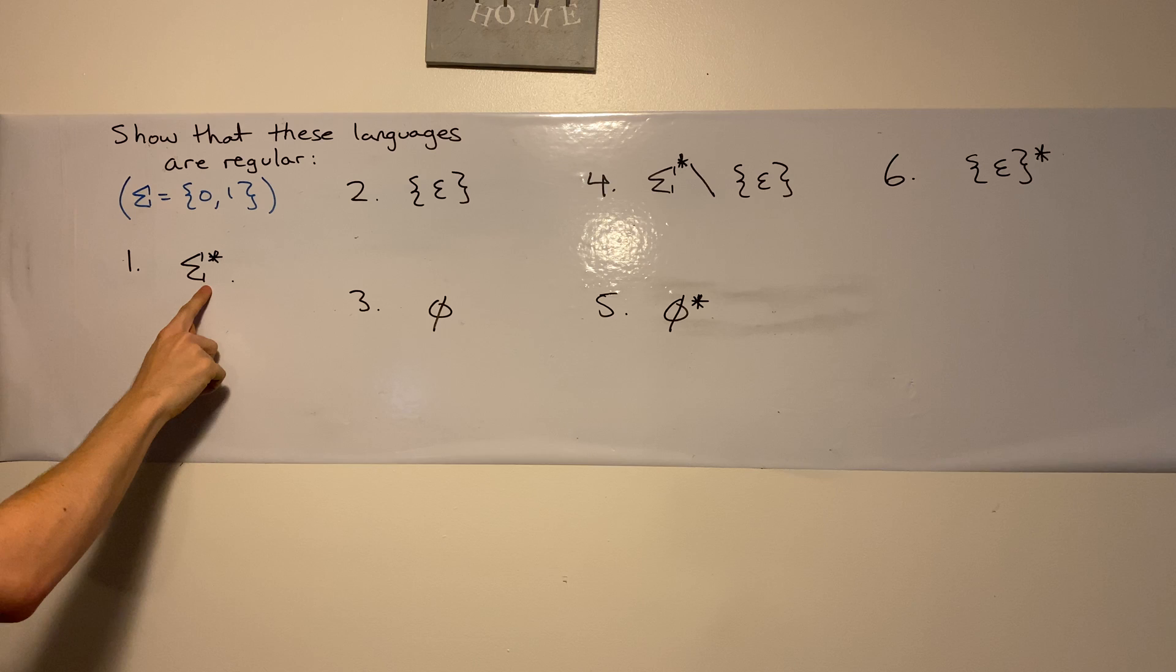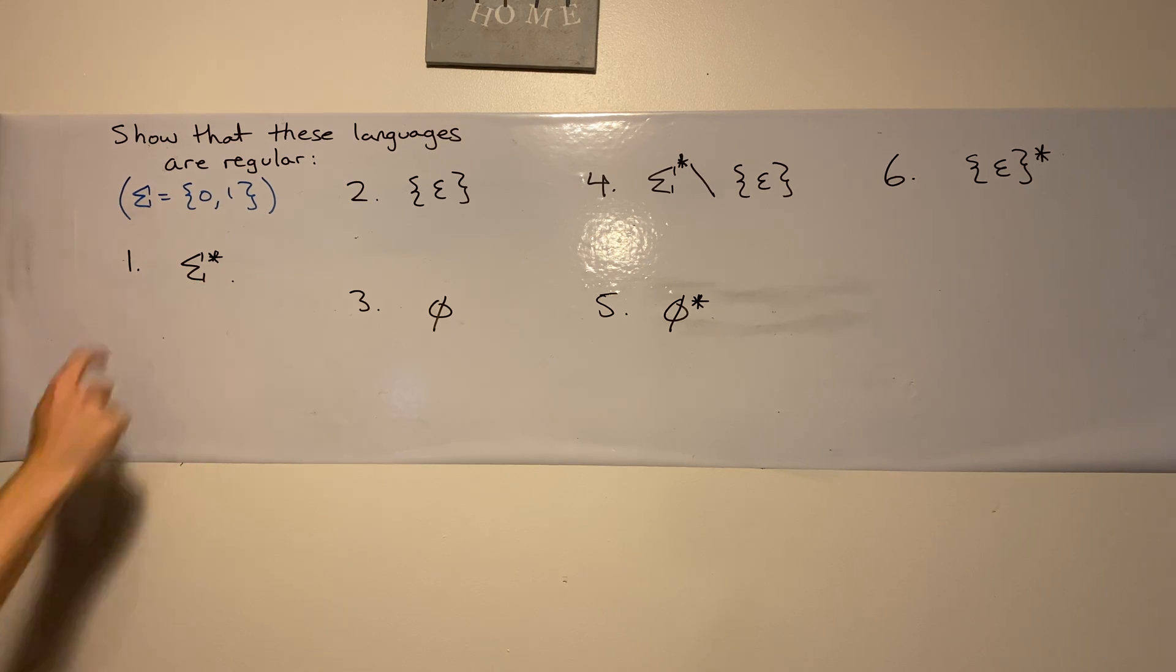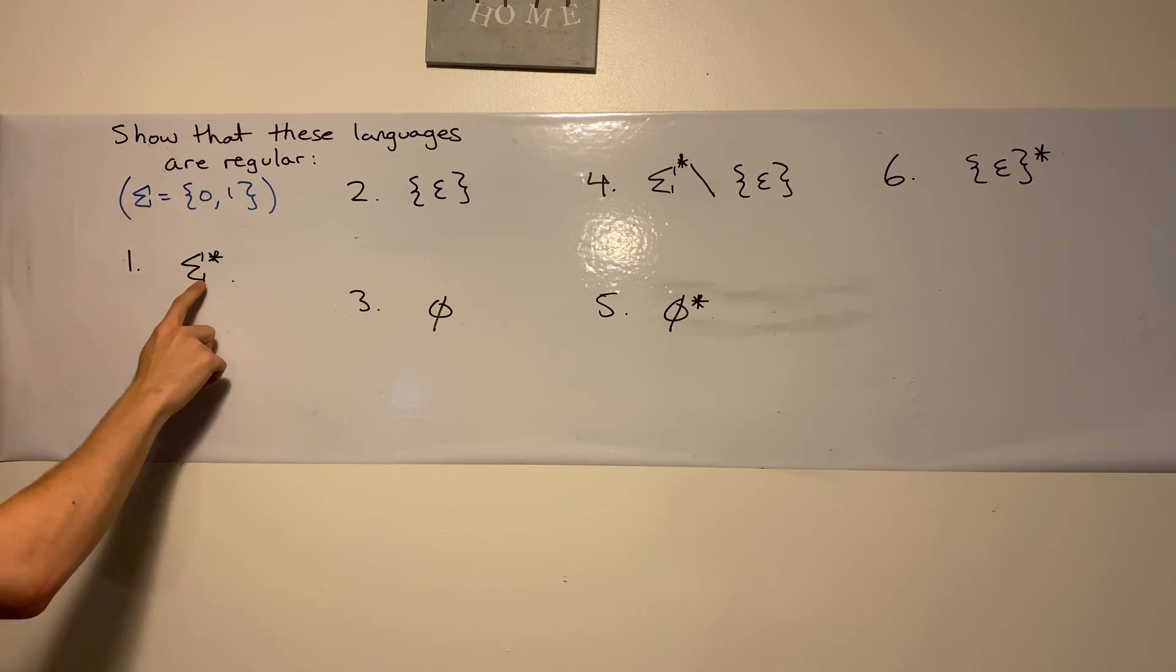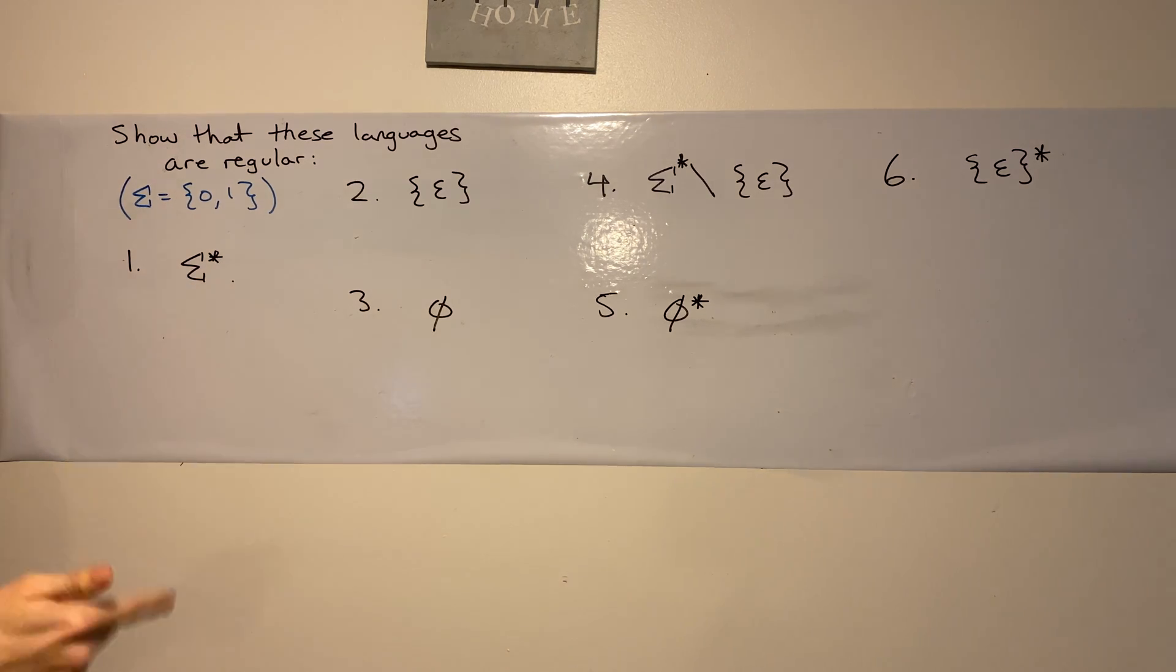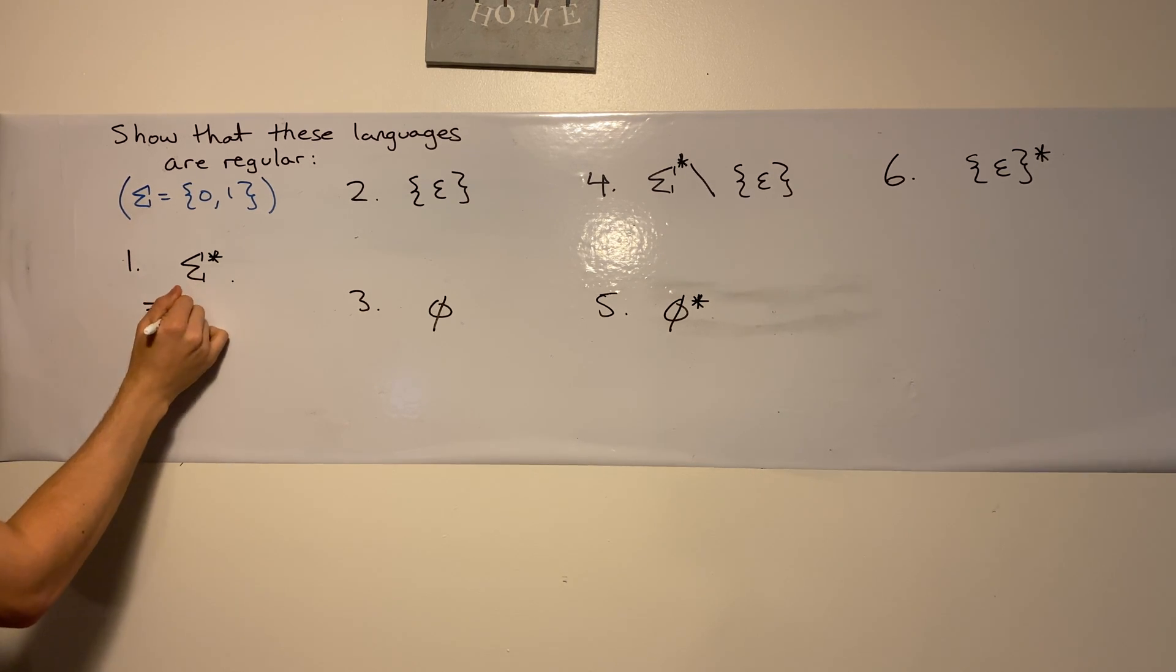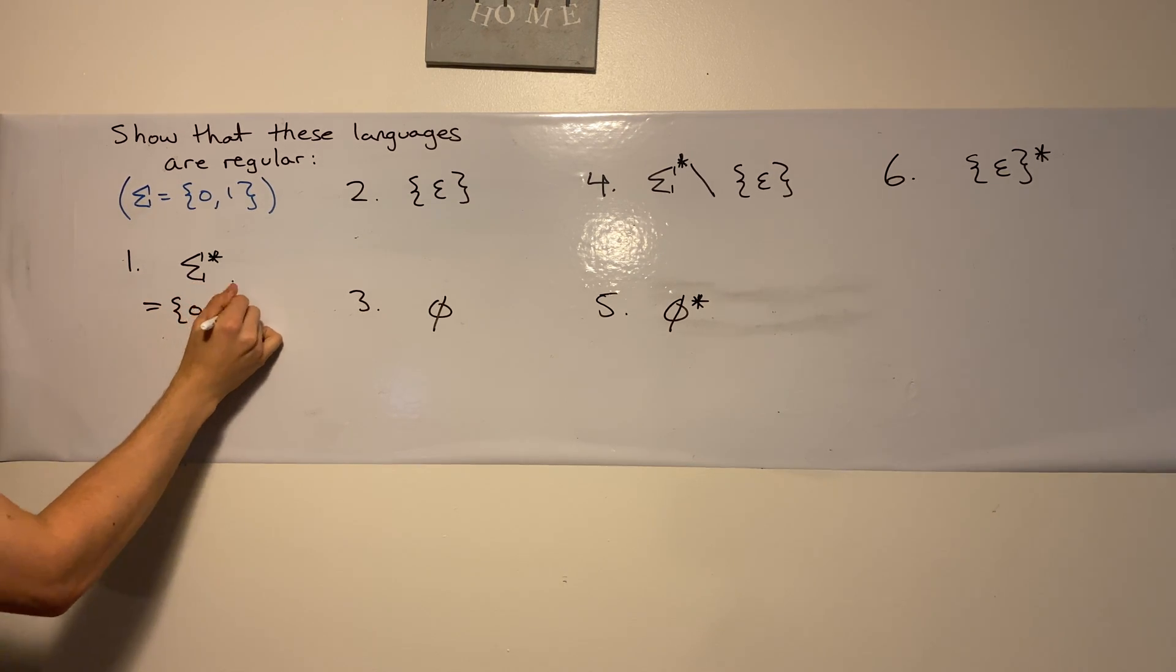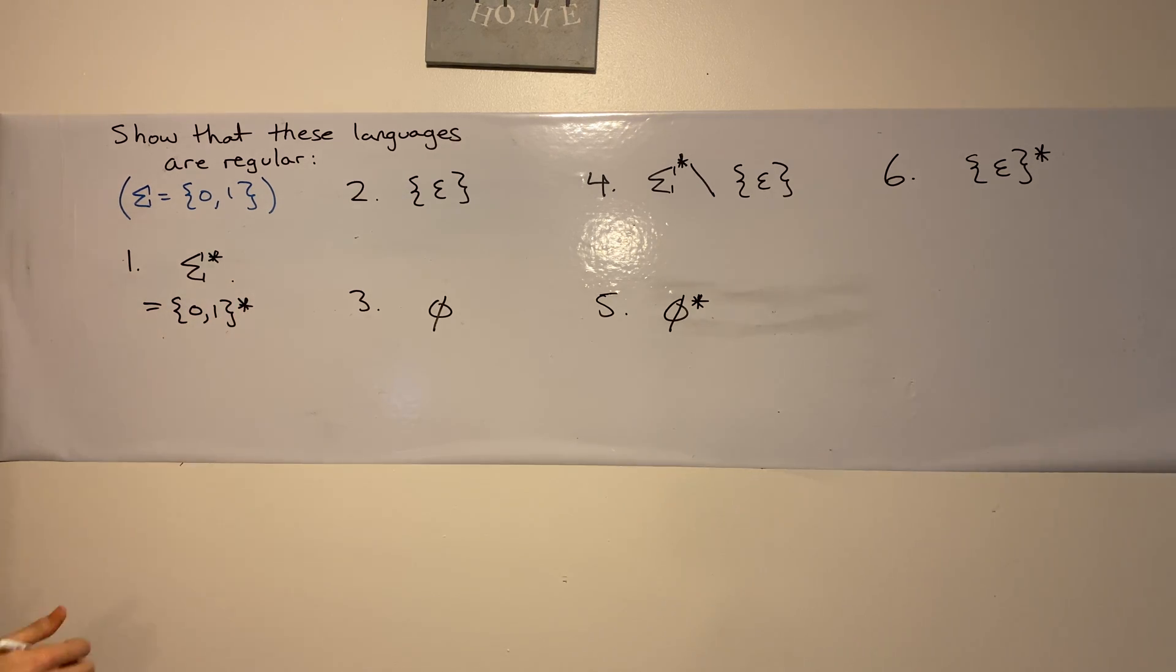So the first one says sigma star. Well, remember that the star of something is zero or more from that something. So this is the same thing as zero one star.